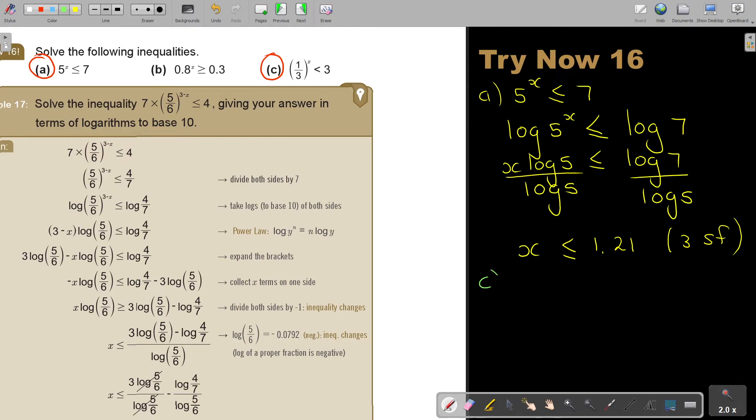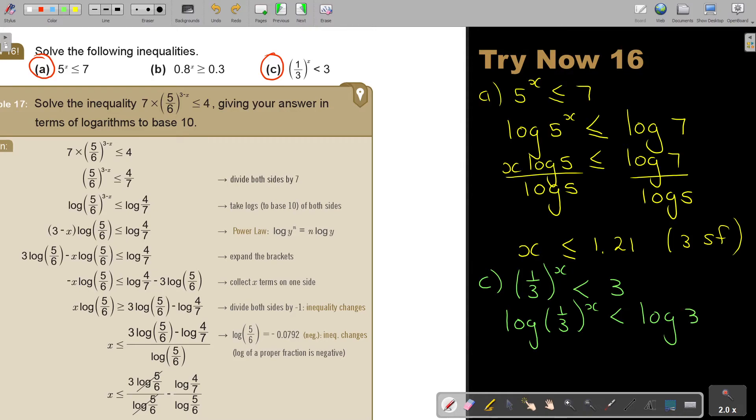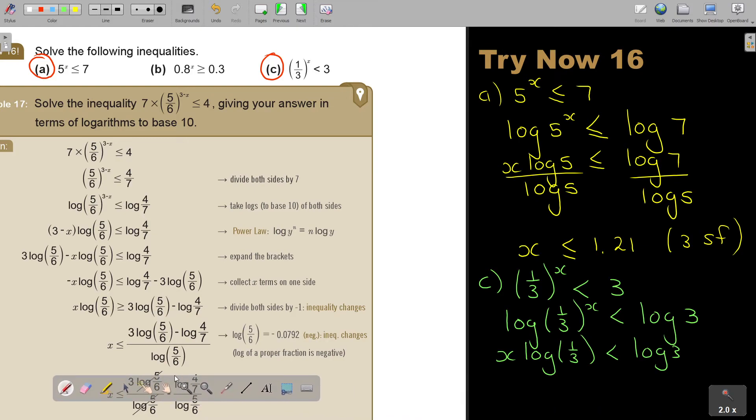Let's look at number C. So 1 third to the power x is smaller than 3. It's log x times log 1 third is smaller than log 3. Bring the x down. Then divide both sides by log 1 third. Now, as soon as I divide it by log 1 third, just because I could first do it in this next step, and I decided not. But as soon as you divide, you must actually swap. Because press on your calculator, press log bracket 1 divide 3 close the bracket, and you get negative 0.47. So you divide by negative, and that's why the sign swap.